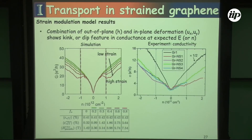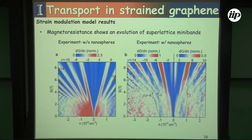Doing the same with the nanoparticle experiments, we get very close agreement. Plotting the perpendicular magnetic field and checking the Hofstadter butterfly: for the unstrained case without nanospheres, we see the zero Landau level and the filling factors all originating from the charge neutrality point. With nanospheres, we start to see superlattice Dirac point effects as we strain the superlattice and apply the magnetic field — we definitely see differences in the Hofstadter pattern.